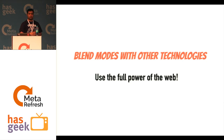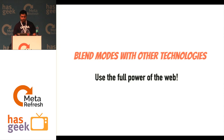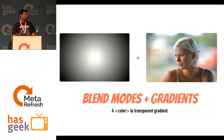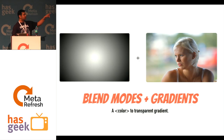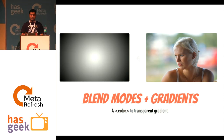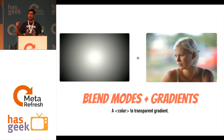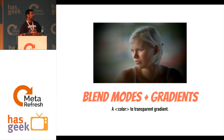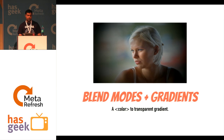Blend modes can work with other technologies too — that's the power of the web. One of the most exciting things is using blend modes with gradients. For example, this is a normal radial gradient — white to black, not transparent to black — and you have another image. If you overlap them and apply a blend mode, you can have an effect that can't really be achieved any other way. This can be used in image galleries and many practical applications.